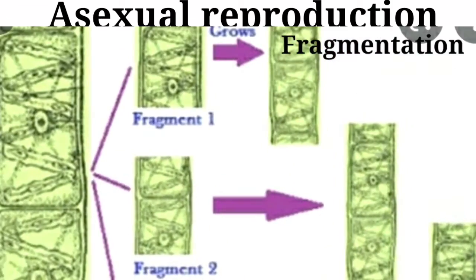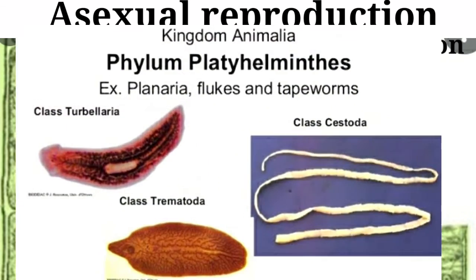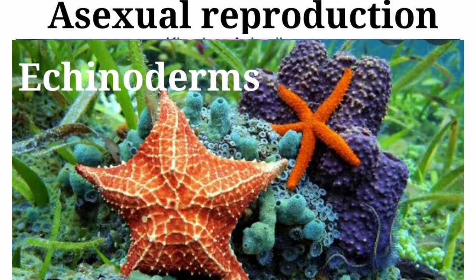The next type of asexual reproduction is fragmentation. Fragmentation is a kind of asexual reproduction wherein a parent organism breaks into fragments. Each fragment is capable of growing independently into a new organism. This type of reproduction is seen in some flatworms, sea animals, some echinoderms, as well as in fungi.